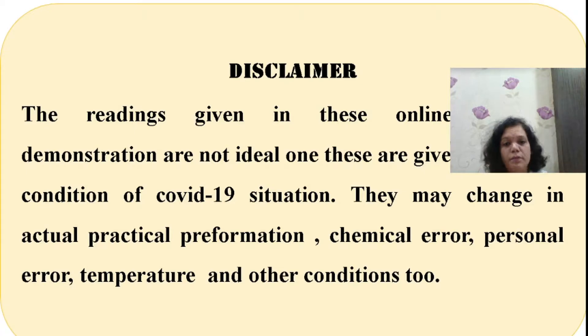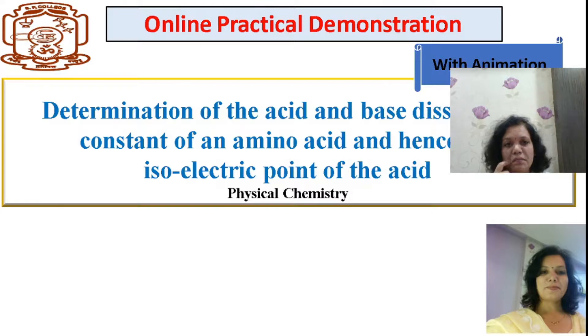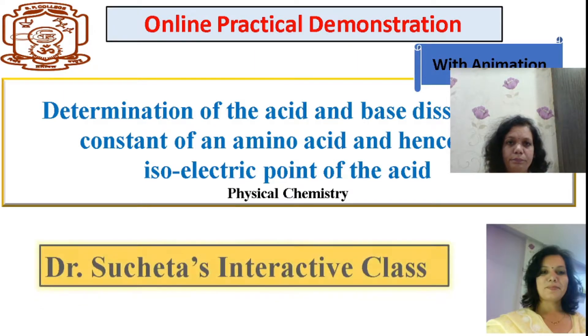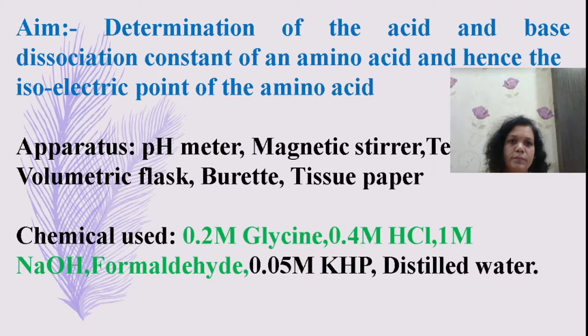Due to chemical error, personal error, temperature, and other conditions, we are going to determine the acid and base dissociation constant of the given amino acid and hence find out the isoelectric point. We need a pH meter, magnetic stirrer, volumetric flask, burette, tissue paper, and chemicals including 0.2M glycine, 0.4M HCl, 1M NaOH, formaldehyde, 0.05M KHP, and distilled water.